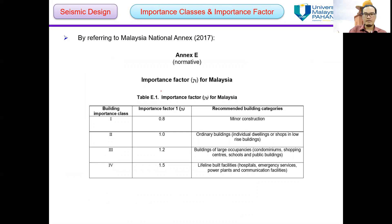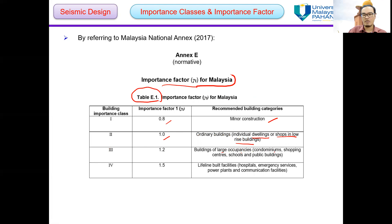These are the recommended values of importance factor for Malaysia, referring to table E1 in the Malaysia National Annex. The value for importance class 1 is 0.8, for minor construction. For importance class 2 it is 1.0, for ordinary buildings such as individual dwellings or shops in low-rise buildings. For importance class 3 it is equal to 1.2, and for importance class 4 the value is equal to 1.5.